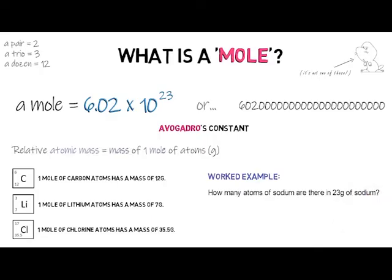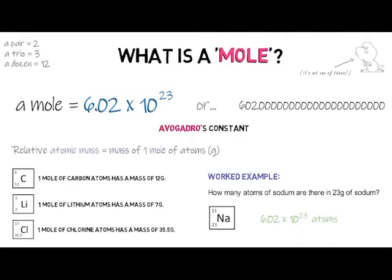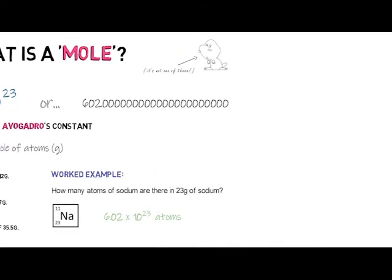Here is an example question: how many atoms of sodium are there in 23 grams of sodium? If you look on the periodic table, the atomic mass of sodium is 23. Since the mass and the atomic mass are the same, you must have one mole of atoms, which is 6.02 × 10²³ atoms. You need to learn that number — try and memorize it.